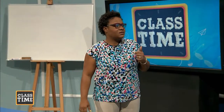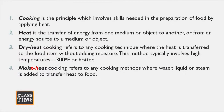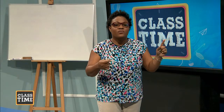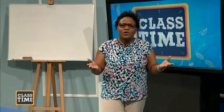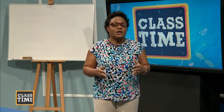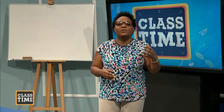Moist heat cooking refers to any cooking method where water, liquid, or steam is added to transfer heat to the food. The difference between moist and dry heat is that with dry heat you do not add any moisture — the moisture already present in the food item assists in the cooking process to tenderize and cook the food. With moist heat, you actually add some amount of moisture — liquid or steam. The liquid can come in different forms: milk, stock, wine, or sauces. Steam is the water vapor we get from the liquid.